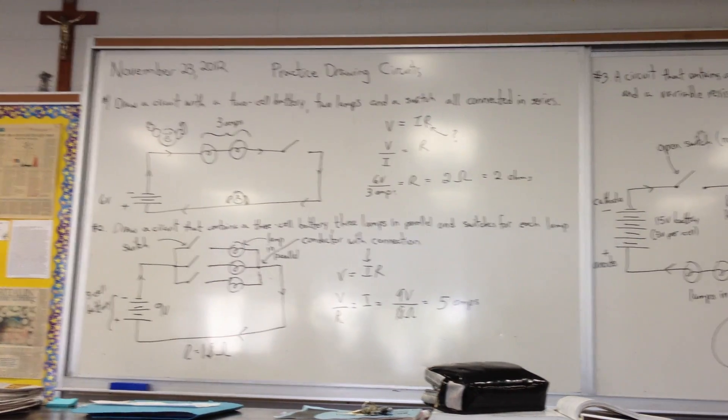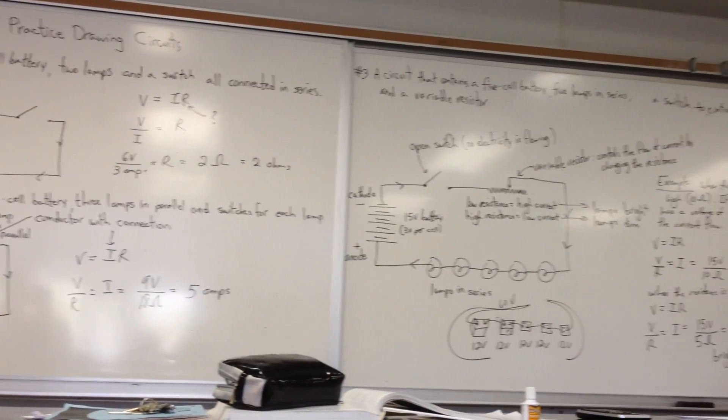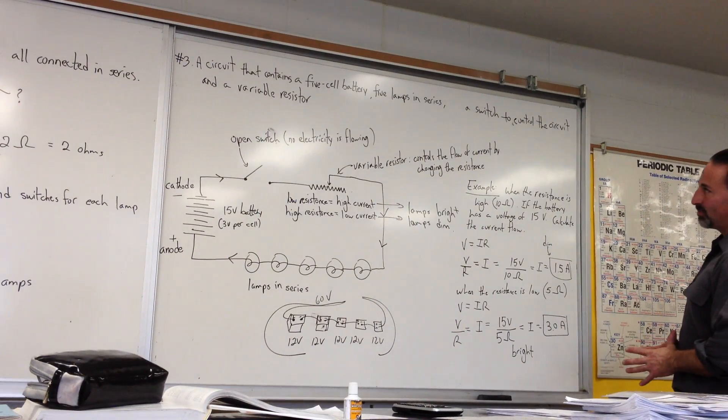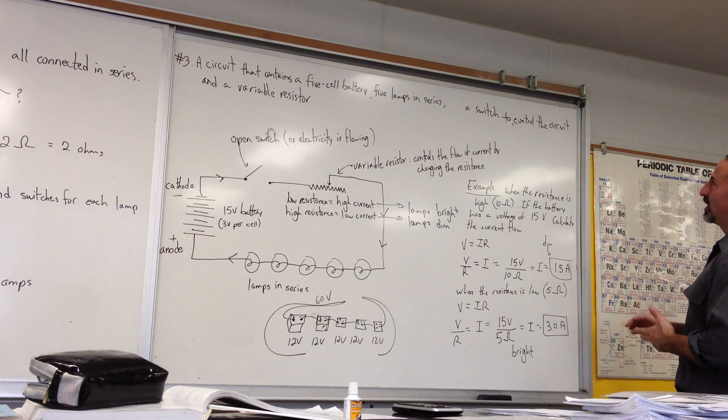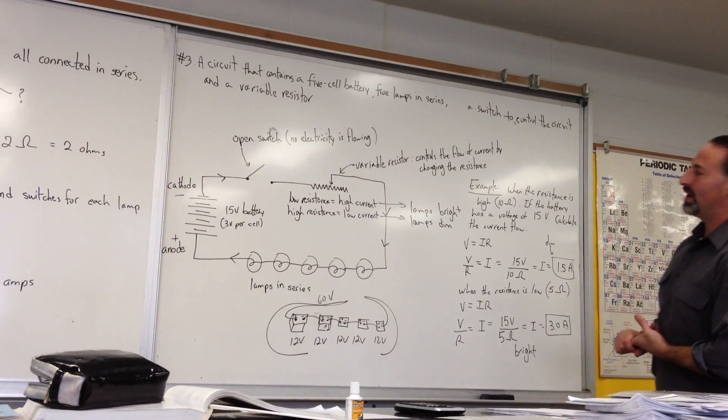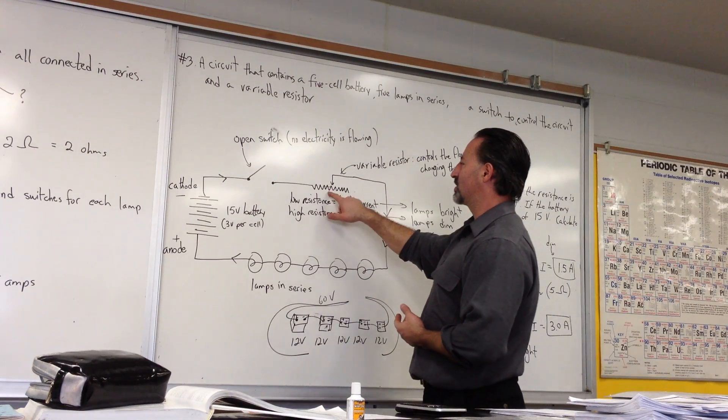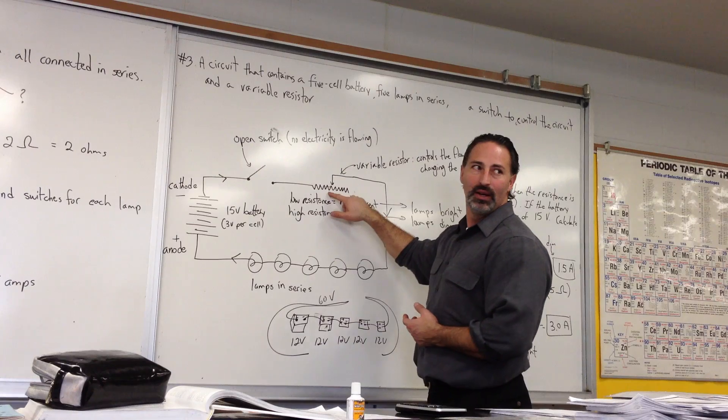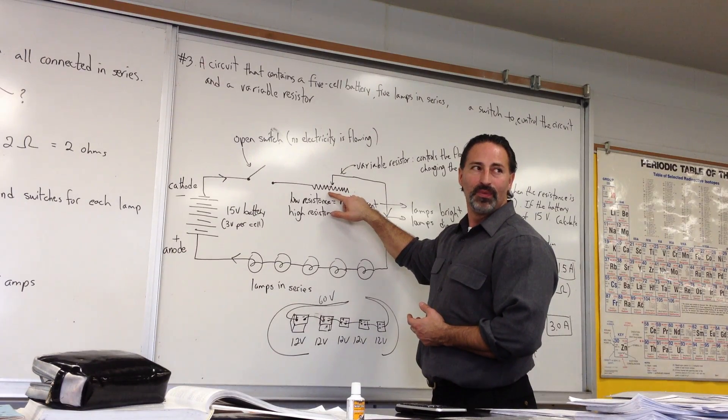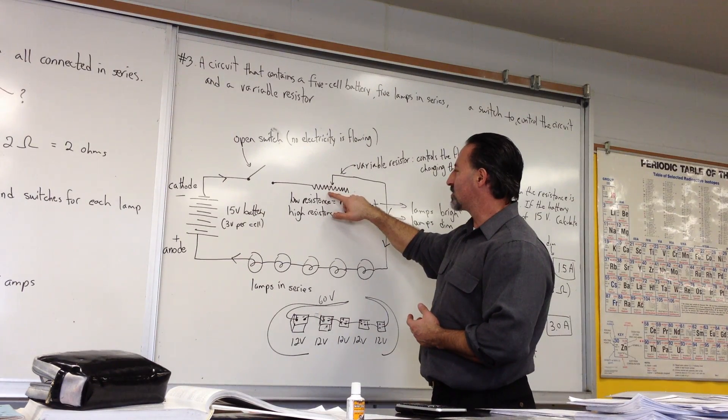Switching to the second board, we have yet another circuit that contains a 5-cell battery, 5 lamps in series, a switch to control the circuit, and a variable resistor. So in a variable resistor, this is the one other thing that I've added, that changes the resistance in the circuit.